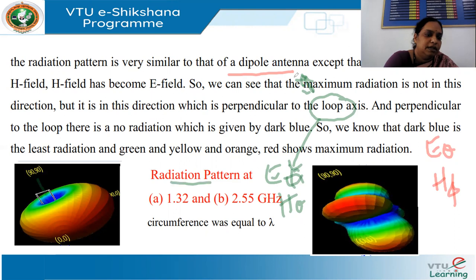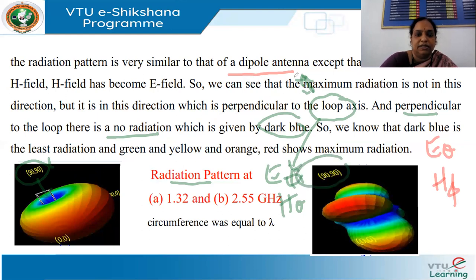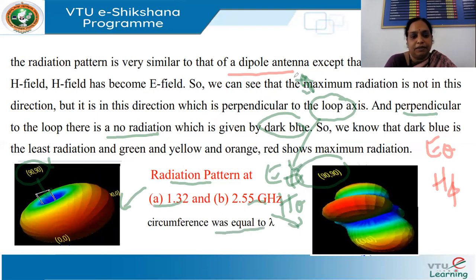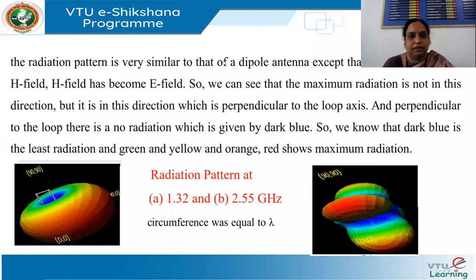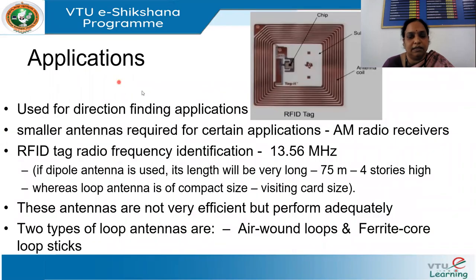At 90° (perpendicular to the loop plane), there is no radiation — shown as dark blue in the pattern. At 0° (same plane as the loop), there is maximum radiation — shown as dark red. The radiation patterns shown correspond to two different frequencies: 1.32 GHz and 2.55 GHz with circumference equal to λ. This is an introduction, and loop antennas are used for direction-finding applications.